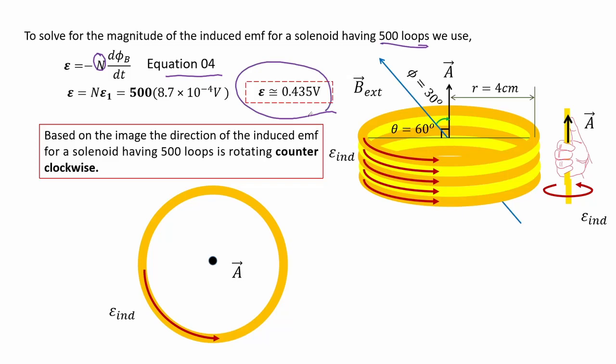Based on the image, the direction of the induced EMF for a solenoid having 500 loops is rotating counter-clockwise.